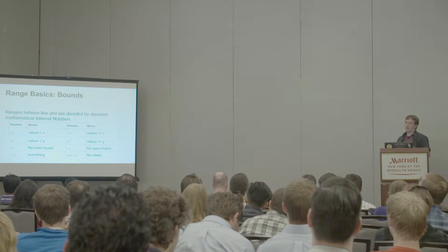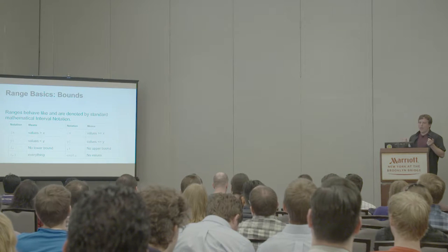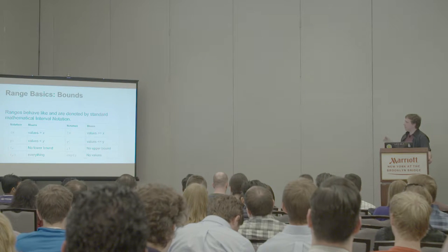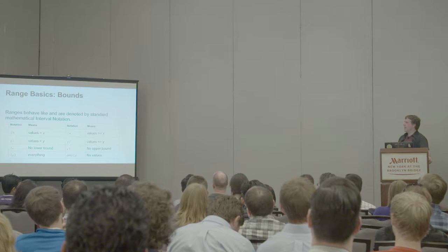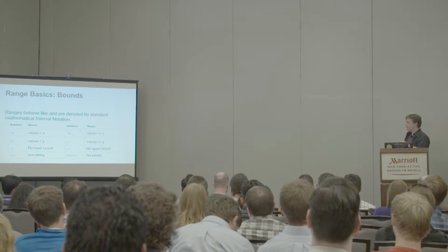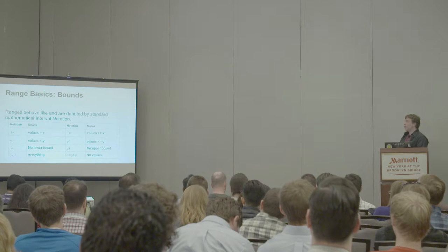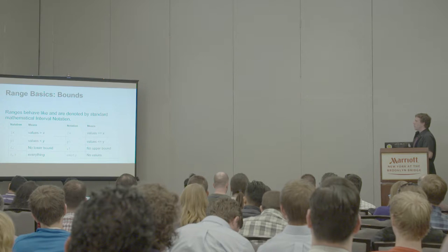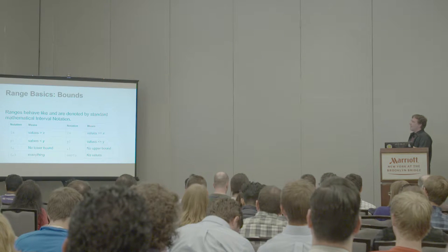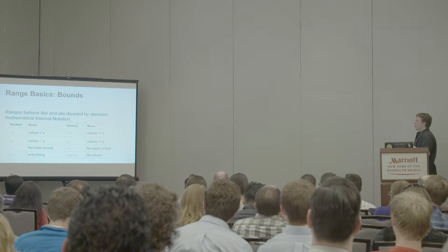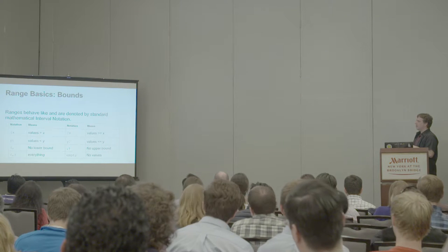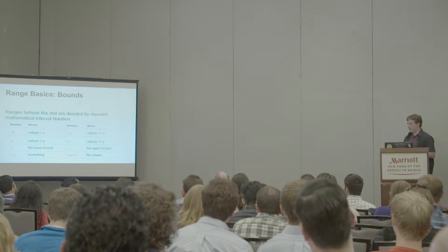Ranges go by standard mathematical notation. If you're familiar with that, you'll find how ranges are expressed to be very natural. A parenthesis on the left side is exclusive — it does not include the actual value indicated, so values greater than x. A square bracket means inclusive — values greater than or equal to x. Likewise on the right side, that is the upper bound — exclusive and inclusive. If no value is given, that means there is no lower bound or no upper bound, so the set of exclusive comma exclusive means everything — every possible value for that data type. Likewise, the word empty means none of the values.